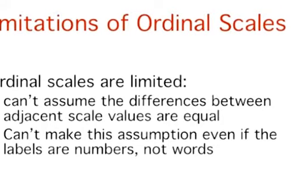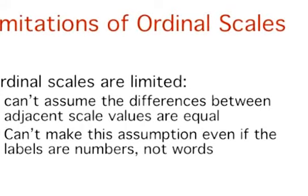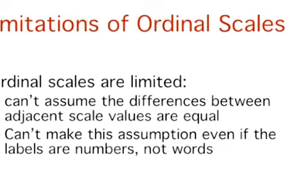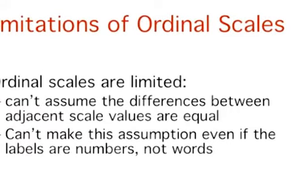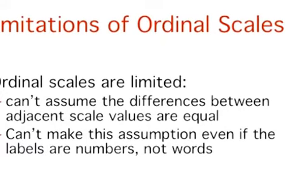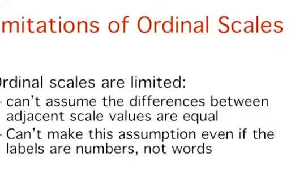Ordinal scales fail to capture important information that will be present in the other scales we examine. In particular, the difference between two levels of an ordinal scale cannot be assumed to be the same as the difference between two other levels. In our satisfaction scale, for example, the difference between the responses very dissatisfied and somewhat dissatisfied is not necessarily the same as the difference between somewhat dissatisfied and somewhat satisfied. Nothing in our measurement procedure allows us to determine whether the two differences reflect the same difference in psychological satisfaction.